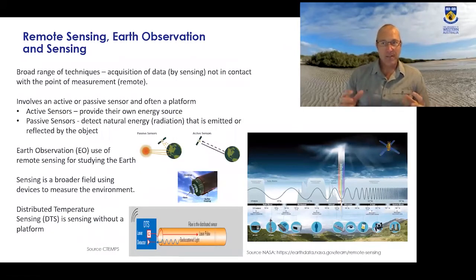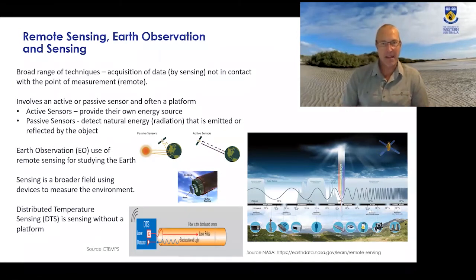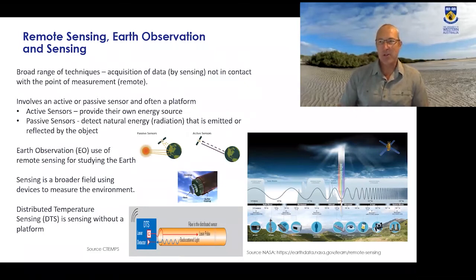In broad terms, remote sensing encompasses a huge range of different techniques that are really about collecting information or data about something by sensing — using computers and equipment that measures some attribute when you're not in contact with it. Sensors can be active or passive, depending on whether they have their own energy source or use the sun's energy to measure things.